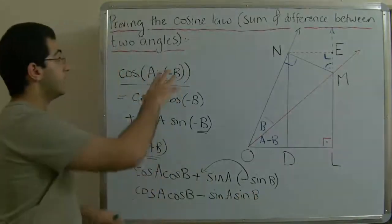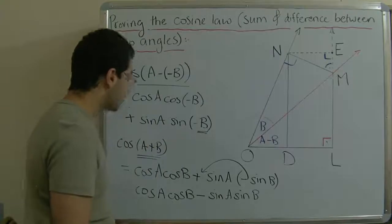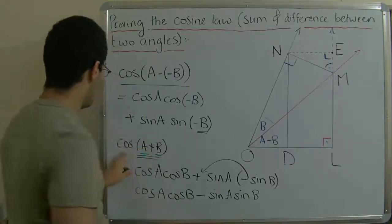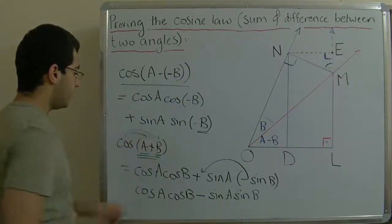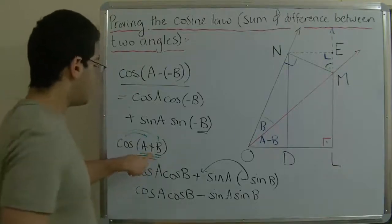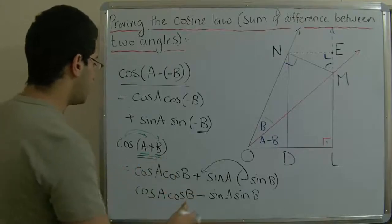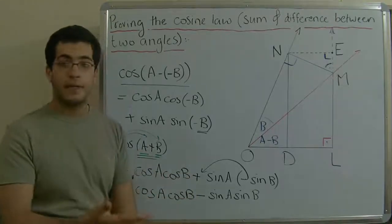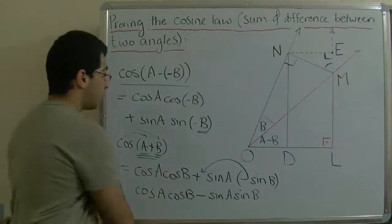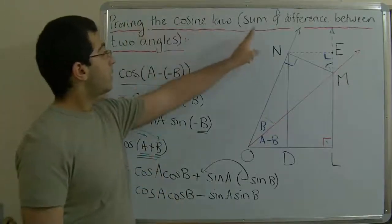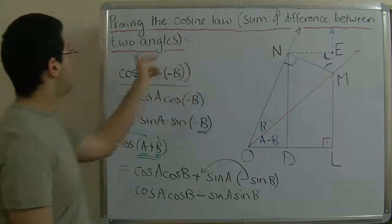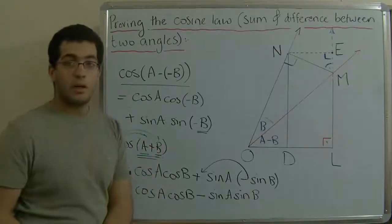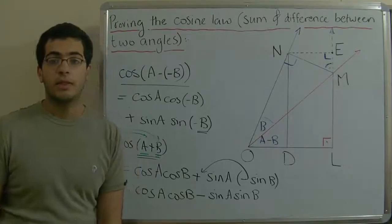So getting the cosine of the difference and the sum of two angles is simple: for cosine(A + B), the answer is cosine A · cosine B, then we flip the sign — if it was positive we put negative — then sine A · sine B. We will have applications on this in the next videos. Next time we will learn the sine law of the sum and difference between two angles, which depends on the cosine rule. Thank you for watching and see you.